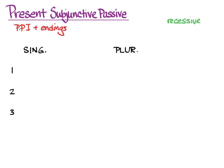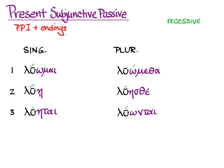Here's what the forms look like all put together: luomai, lue, luetai, lueometha, luestha, lueontai. Check out the second singular — lue can be present subjunctive passive second person singular, or 'you are freed' the second singular present indicative passive as we learned in the last video, or the present subjunctive active third person singular. Context will have to tell you which to choose.